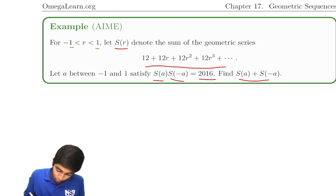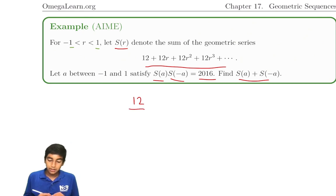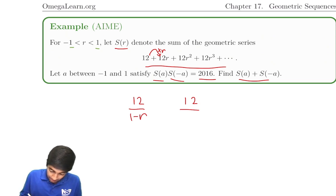Let's use the infinite geometric sequence formula. What is s of a? The first term, 12, over 1 minus r, because r is the common ratio times a. What is s of negative a? 12, the first term, but this time, in this case, r is equal to a, so it's 12 over 1 minus a. But in this case, r is negative a, so it's 1 minus minus a, which becomes 1 plus a.